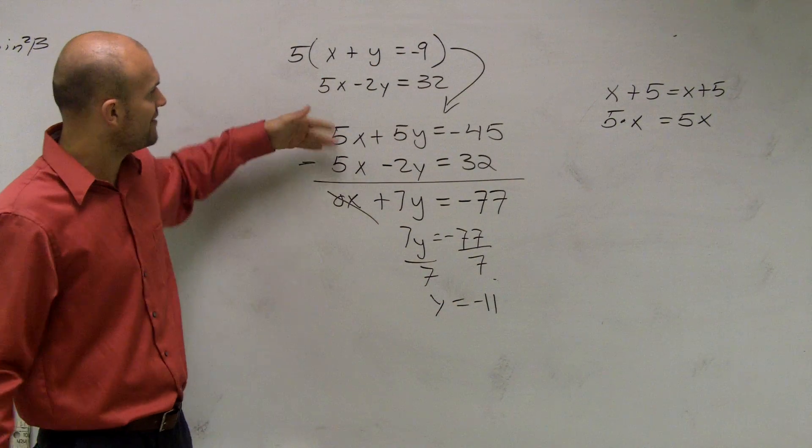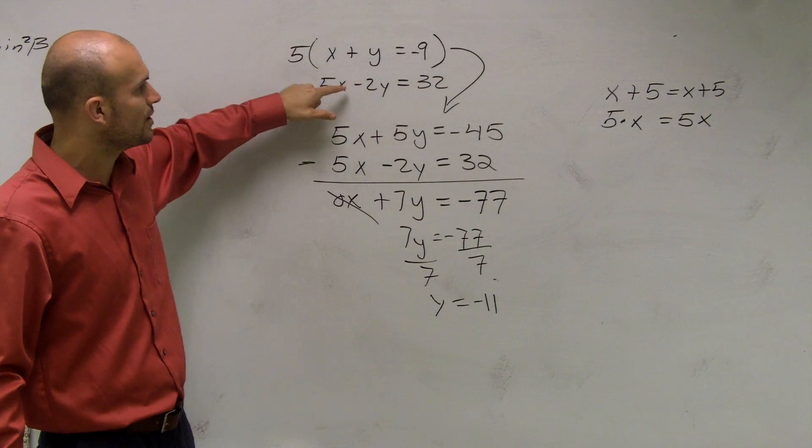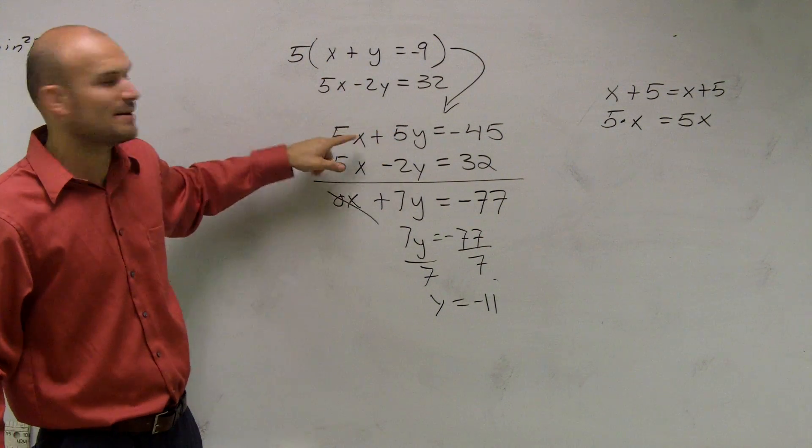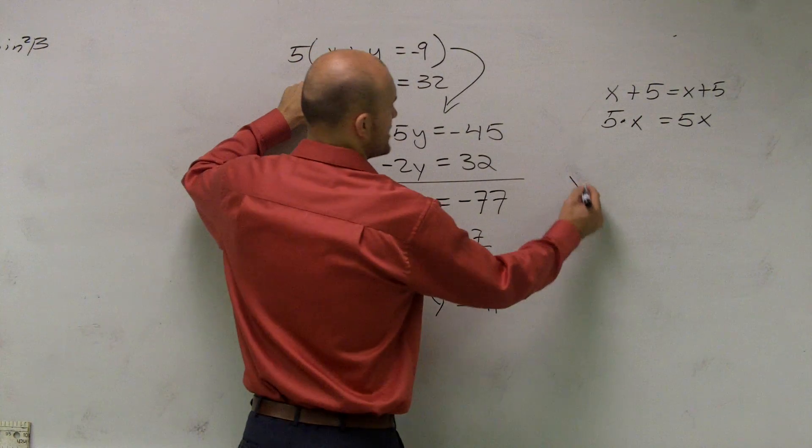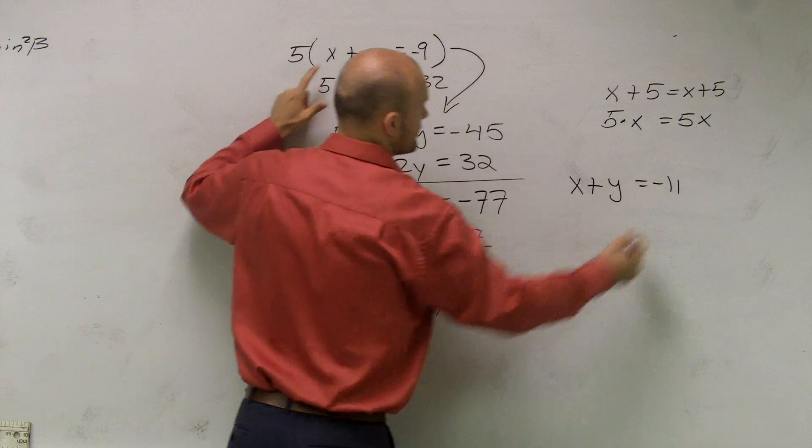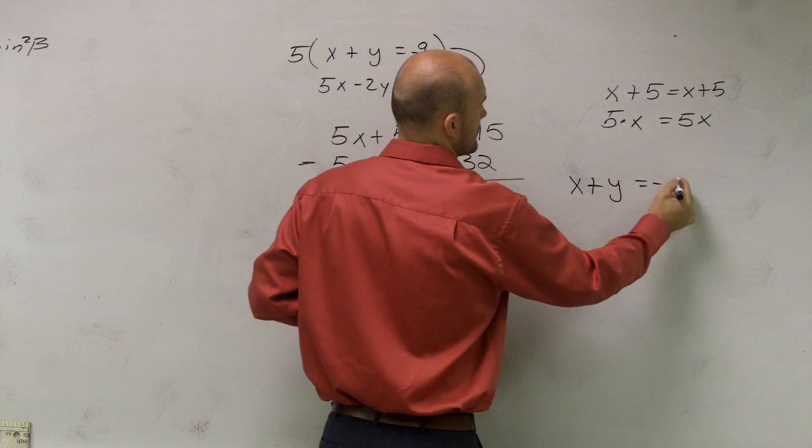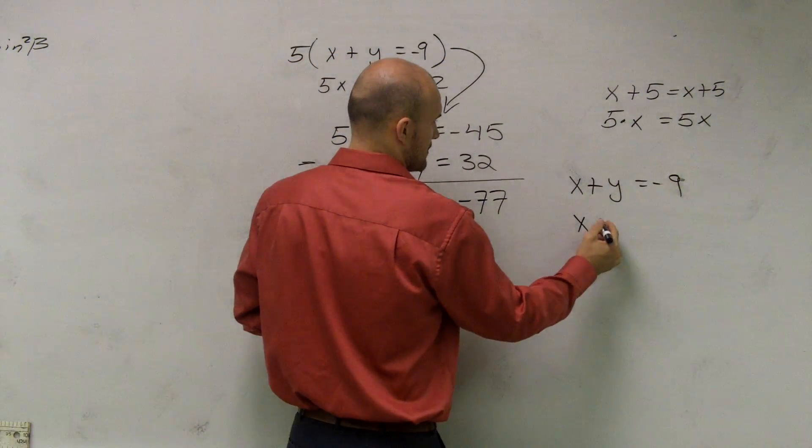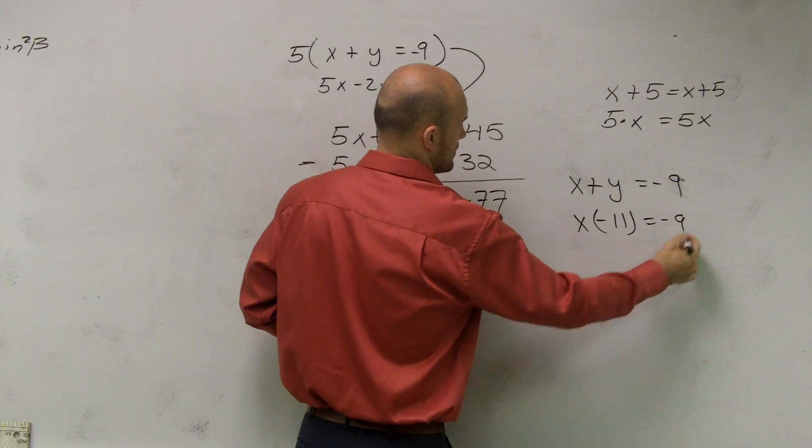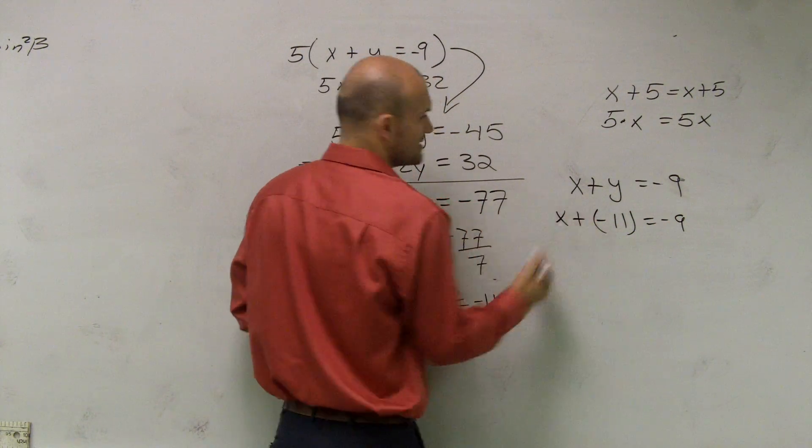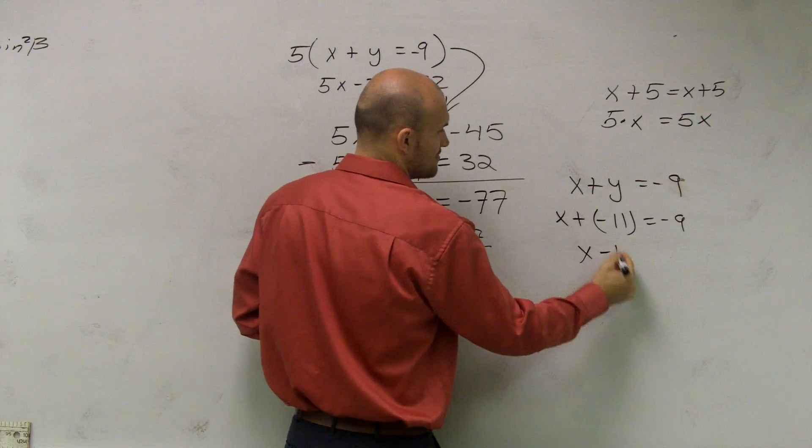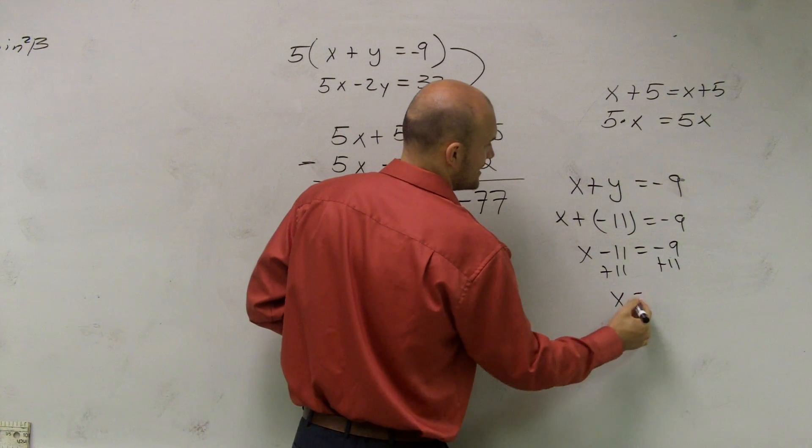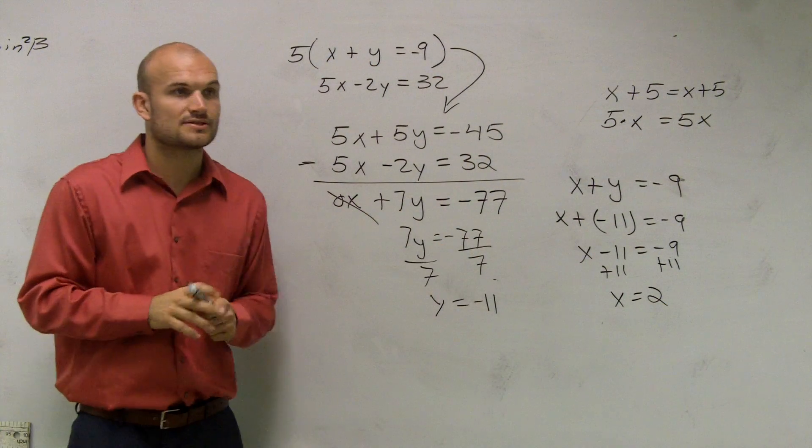So I plug in negative eleven in for one of these. You can go back to your original equation, x plus y equals negative nine. Plug negative eleven in for y. x plus negative eleven, which is really x minus eleven equals negative nine. Add eleven, x equals positive two. And therefore, you found the solutions.